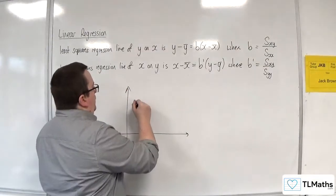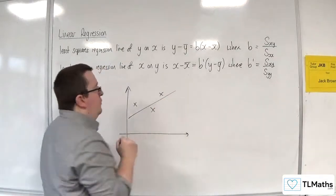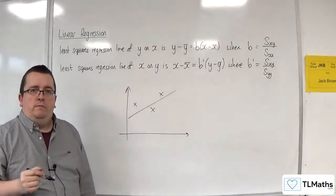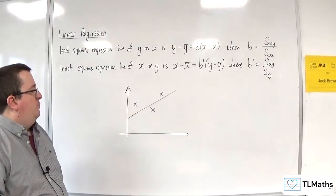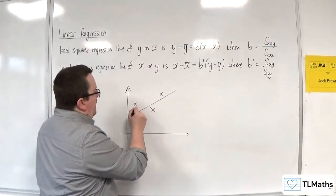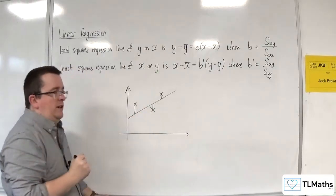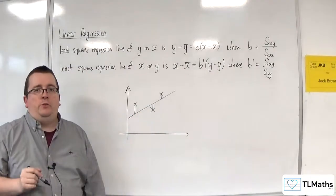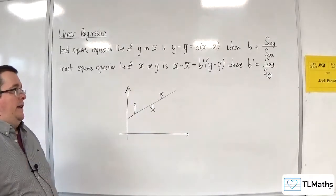So essentially the way to think about it is this: if you've got some data points and your regression line, which you can imagine is your best line of best fit, essentially what you're trying to do is find those distances and minimise them—the vertical distances from the points to the line. And that gives you your line.